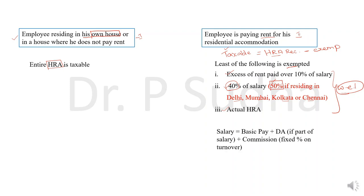We are using the terms '10% of salary' and '40% of salary,' so what is the meaning of salary here? Salary means basic pay plus dearness allowance. If it enters into employment, then commission based on a fixed percentage on turnover is also included. So for calculating salary, we have to add basic pay, dearness allowance, and commission.